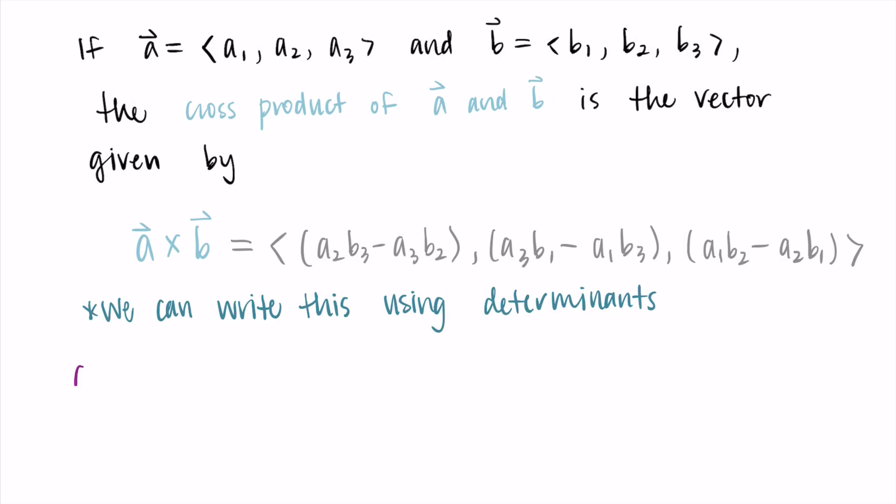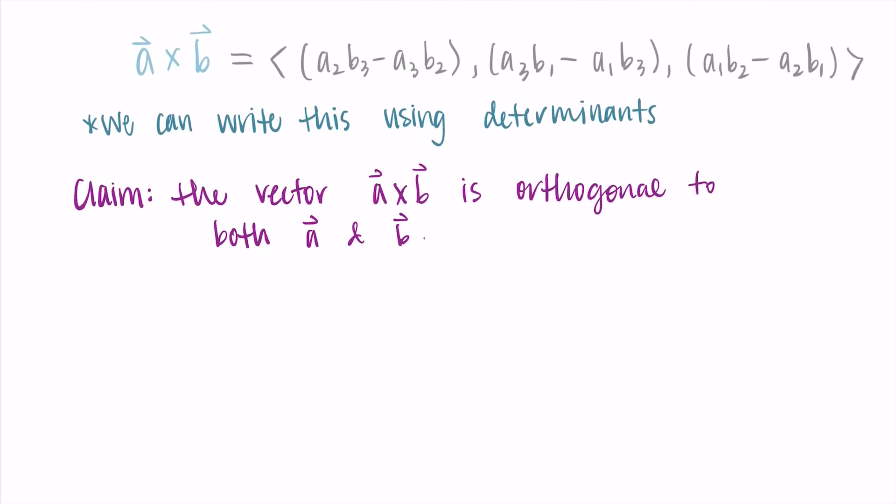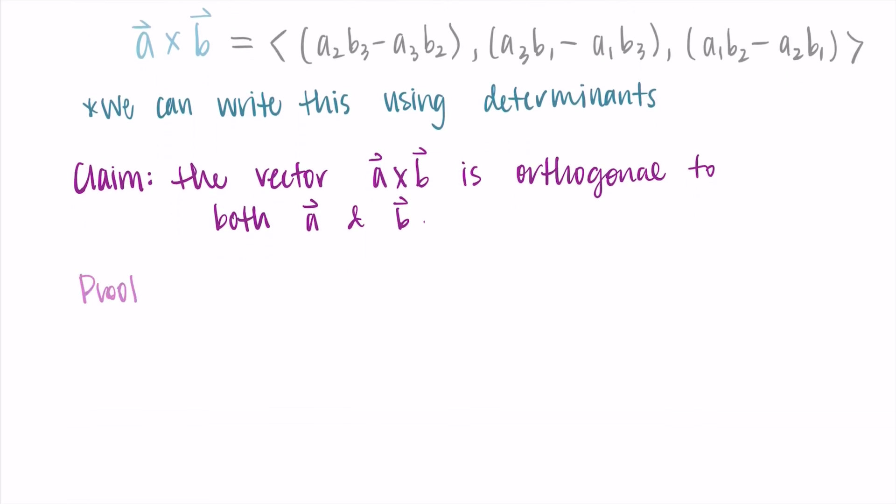Before I start talking about determinants, I just want to prove to you that this vector I wrote with all of these A's and B's, this cross product, I want to prove to you that it is orthogonal to A and B. I'm just going to prove it's orthogonal to A and a similar argument will follow for B, but basically I've just given you this formula out of nowhere, and the best I can do for convincing you that it's true is to take this formula for the cross product and show it is orthogonal to my vectors that I wanted.